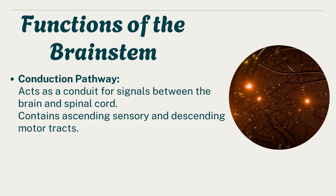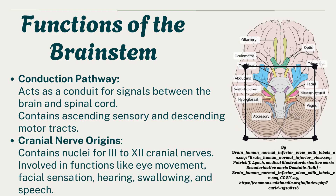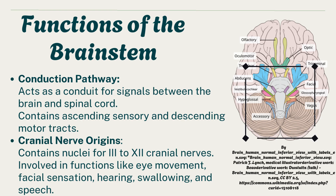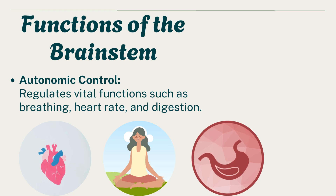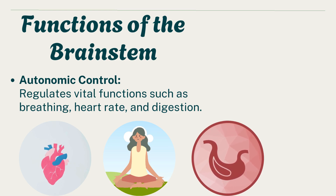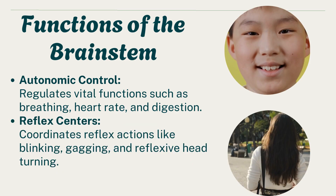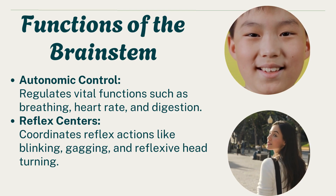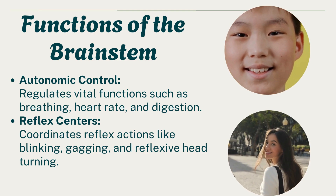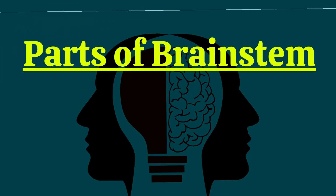The brainstem contains nuclei for cranial nerves 3 to 12, involved in functions like eye movement, facial sensation, hearing, swallowing, and speech. It also provides autonomic control, regulating vital functions such as breathing, heart rate, and digestion. Additionally, it coordinates reflex actions like blinking, gagging, and reflexive head turning.